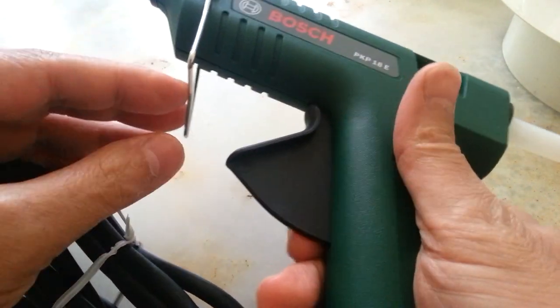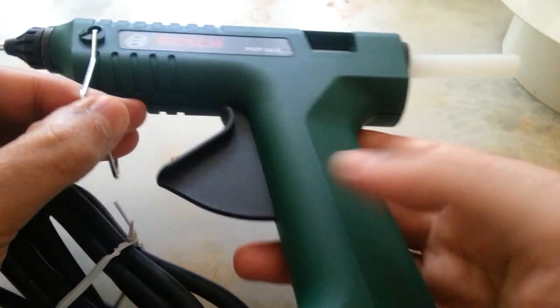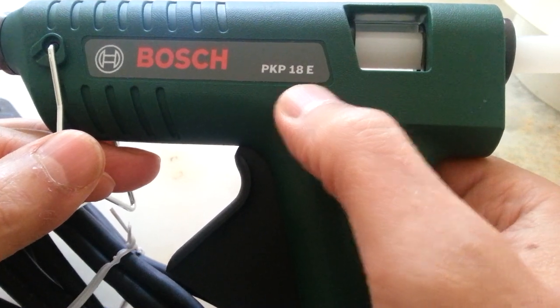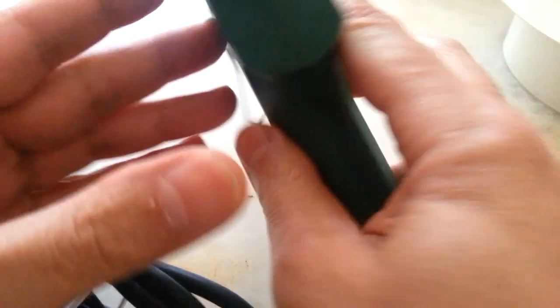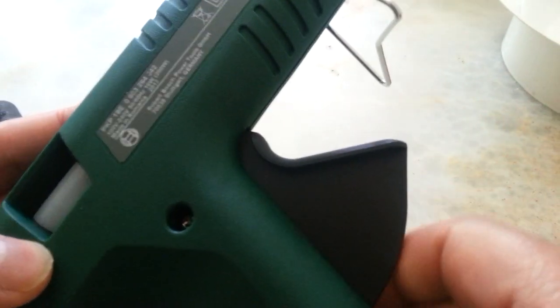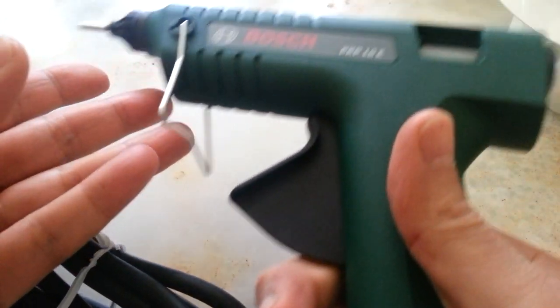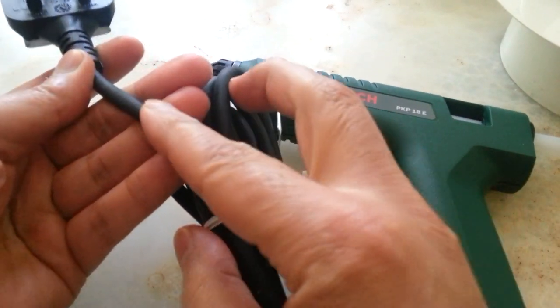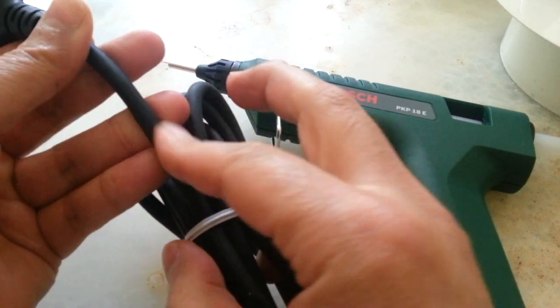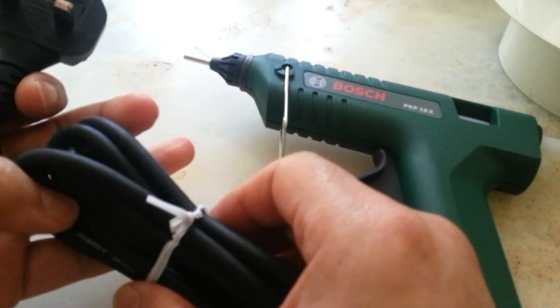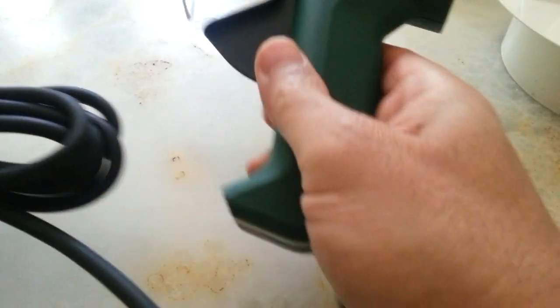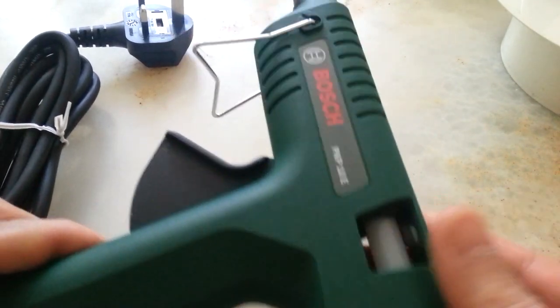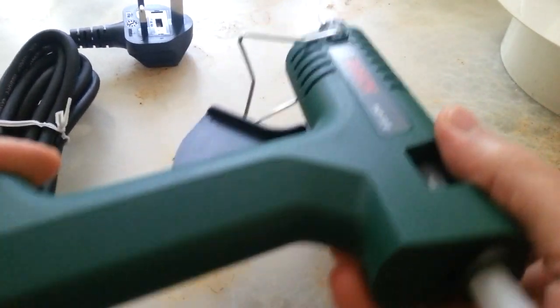This is the Bosch PKP 18E and it's very well made, good quality. The cable you cannot burn by accident, it's heatproof and heat resistant. It's one of the cheapest high quality glue guns that you can find.